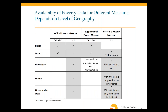Data availability sometimes determines which measure can be used. The official poverty measure is available in two census datasets: the Current Population Survey (CPS) and the American Community Survey (ACS). The CPS is available for the nation and state and goes back many years, while the ACS is a larger survey that can be used to examine poverty at much smaller geographic levels — including cities and smaller areas — with more reliable results for smaller demographic groups.